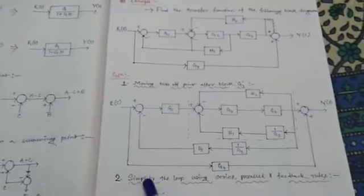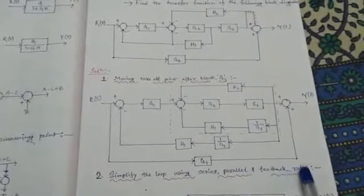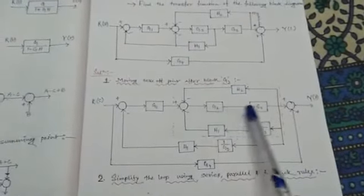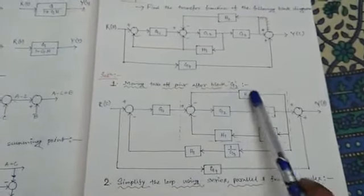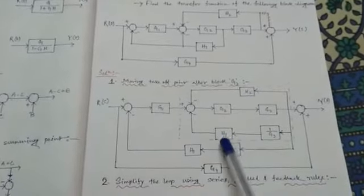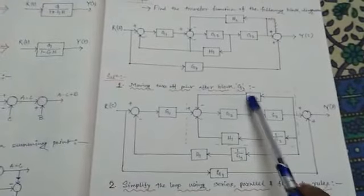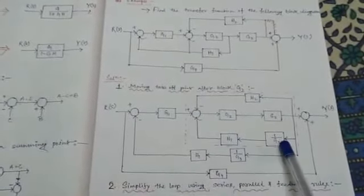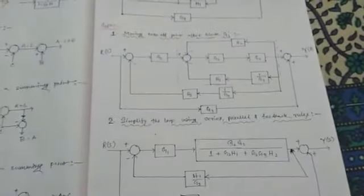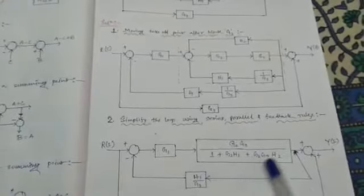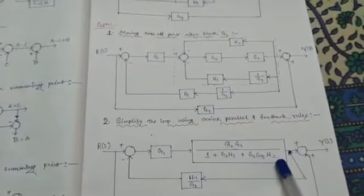In step 2 we simplify the loop using series, parallel, and feedback rules. The series combination gives g2 × g3. The parallel combination of the feedback paths gives h2 + h1/g3. Applying the feedback rule then yields the simplified block: g2·g3 / (1 + g2·h1 + g2·g3·h2).